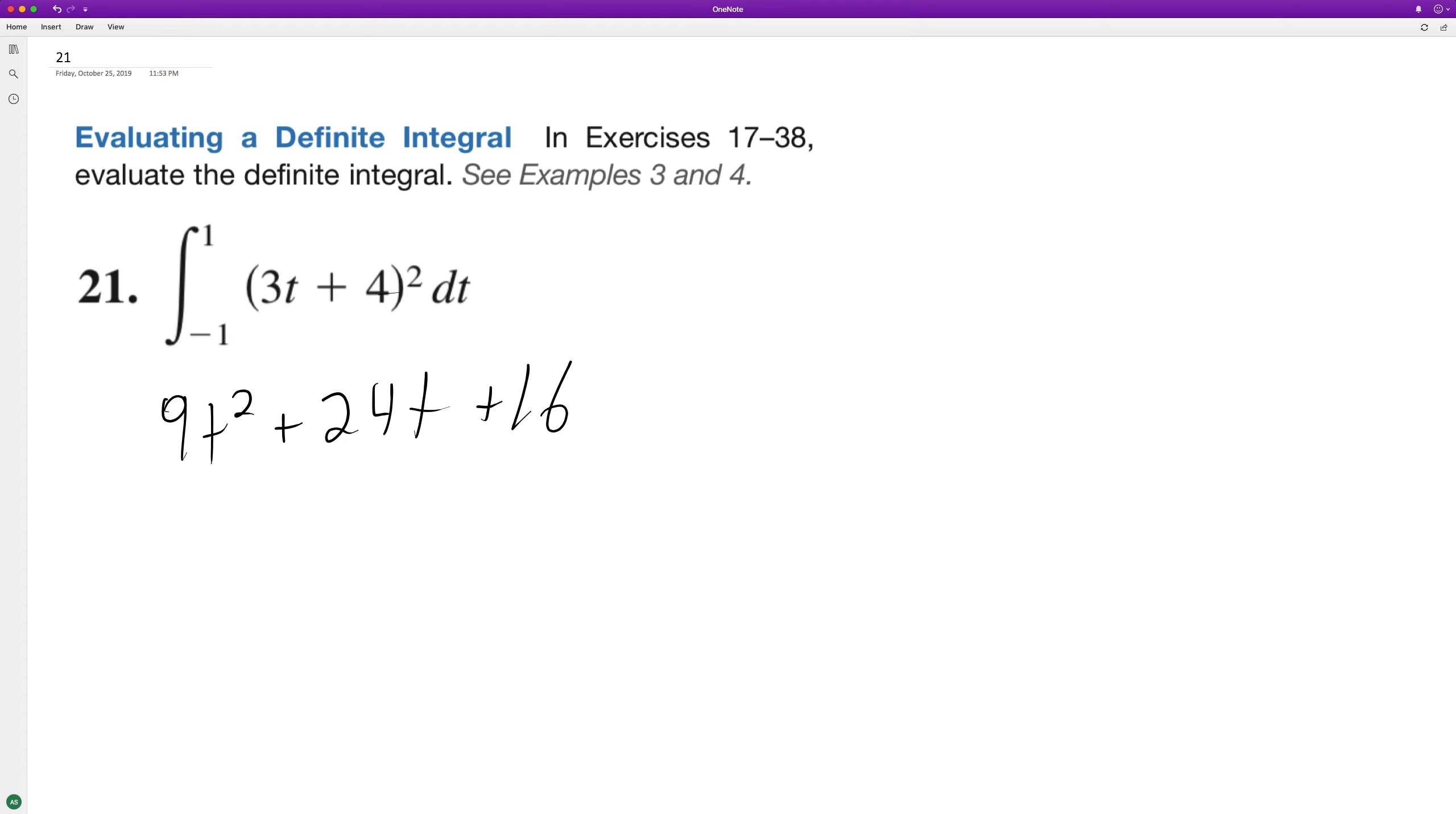So when we integrate this, we get 9t raised to the third over 3, which is just 3t cubed, plus 12t squared, plus 16t.